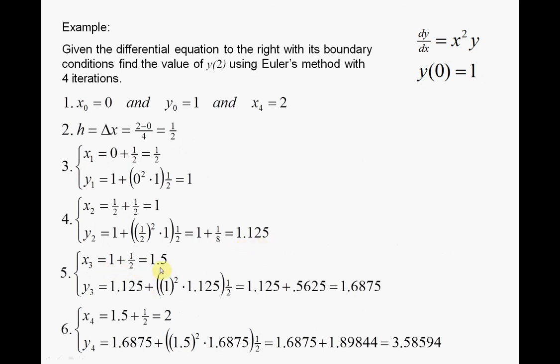x3, we're at the third strip, we're at 1.5. y3 equals y2, 1.125, by x2 squared y2. What's x2? 1. And what's y2? 1.125 by the strip width. Do all the maths, 1.6875.